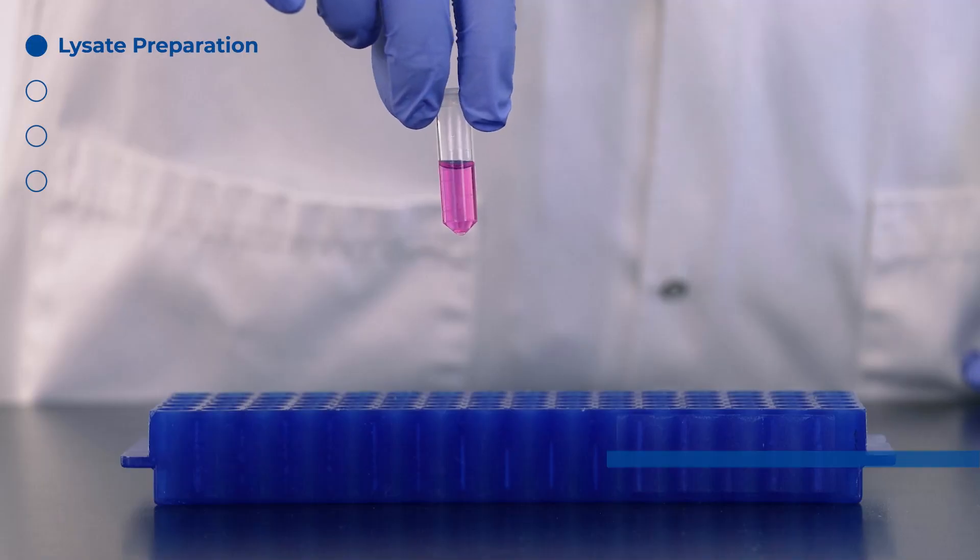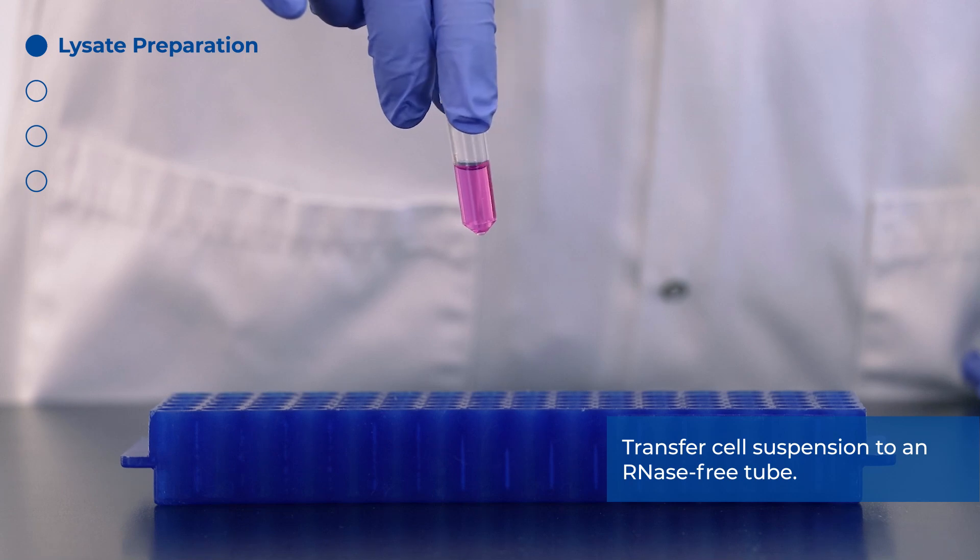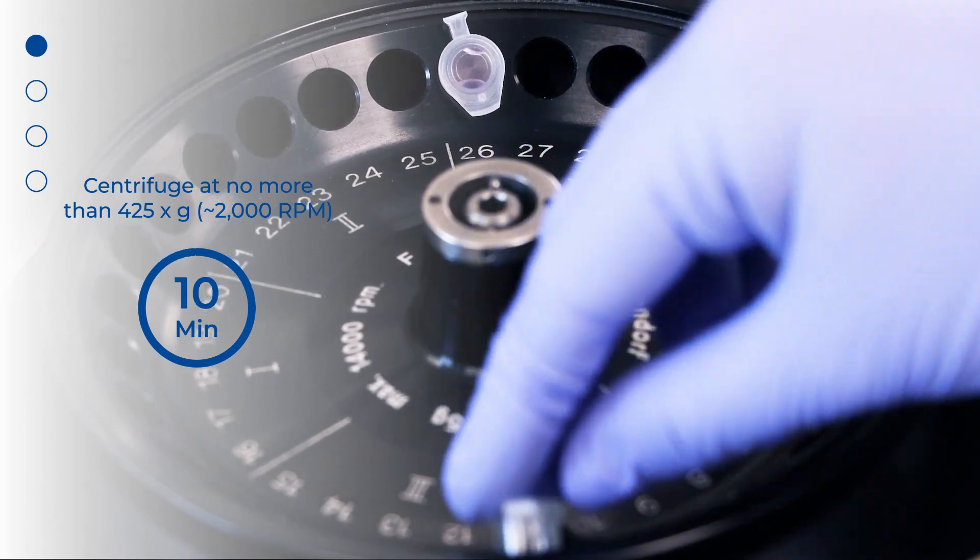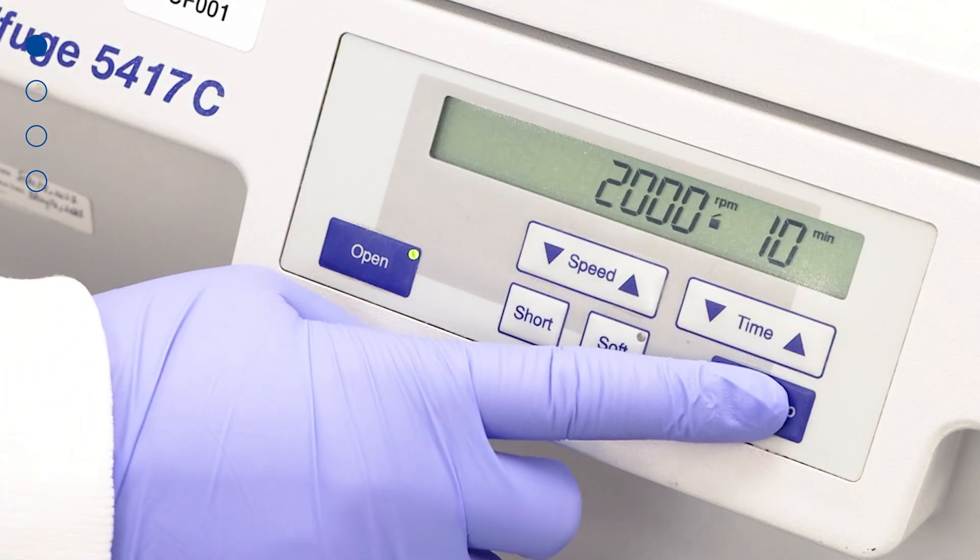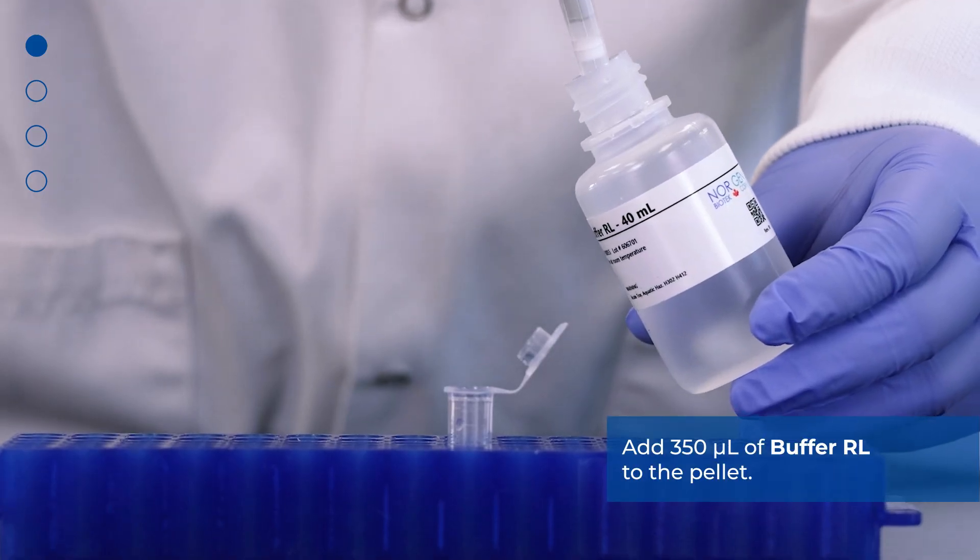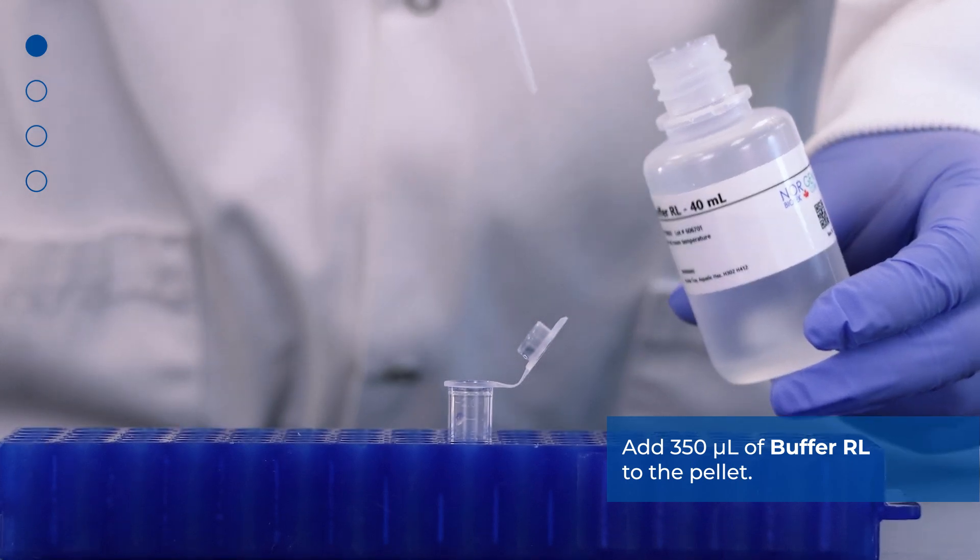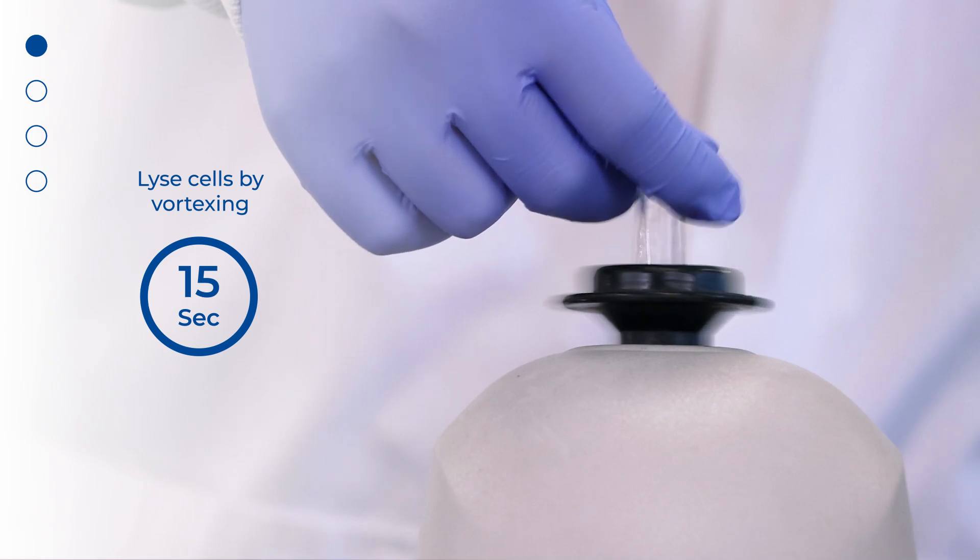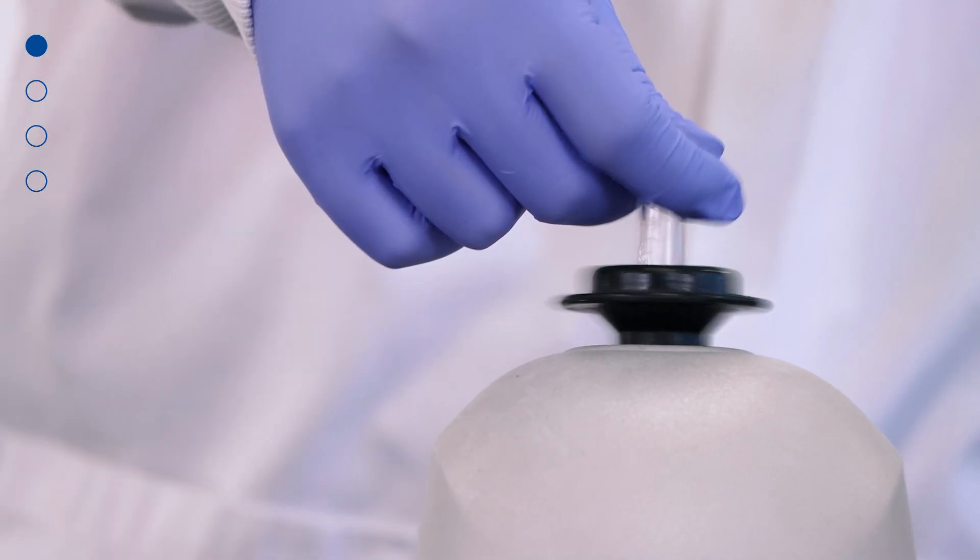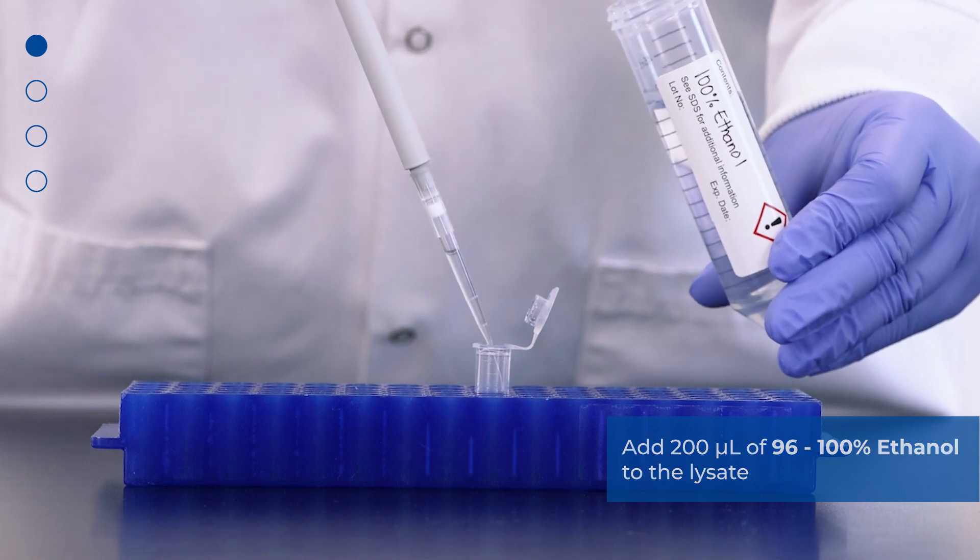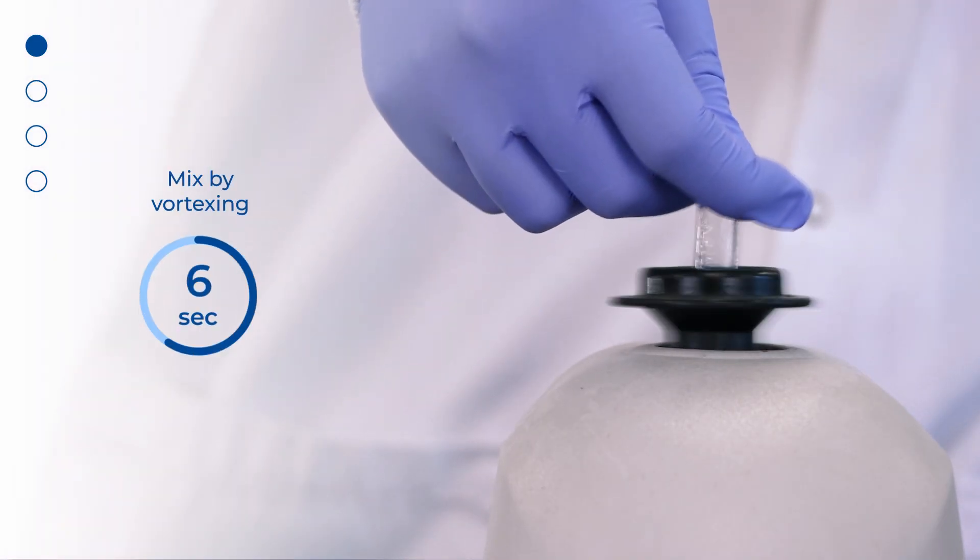To lyse your sample, transfer cell suspension to an RNase-free tube and centrifuge at no more than 425 g or 2000 rpm for 10 minutes to pellet cells. Carefully decant the supernatant. Add 350 microliters of buffer RL to the pellet. Lyse cells by vortexing for 15 seconds. Ensure that the entire pellet is completely dissolved before proceeding to the next step. Add 200 microliters of 96 to 100% ethanol to the lysate. Mix by vortexing for 10 seconds.